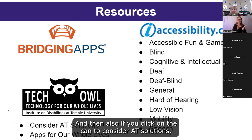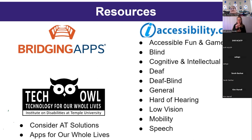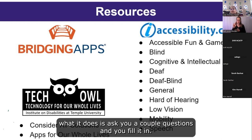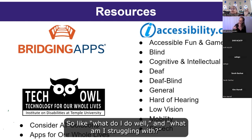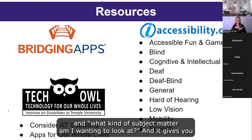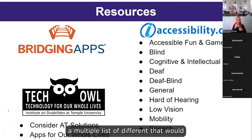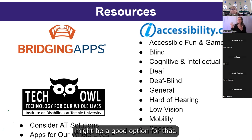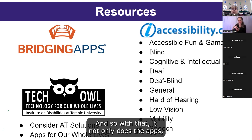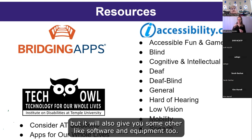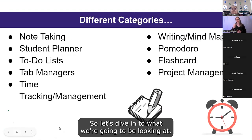The 'Content Consider AT Solutions' tool asks you a couple of questions: what do I do well, what am I struggling with, and what subject matter am I looking at? It then gives you a list of different AT that might be a good option. It doesn't just cover apps — it will also give you software and equipment recommendations.